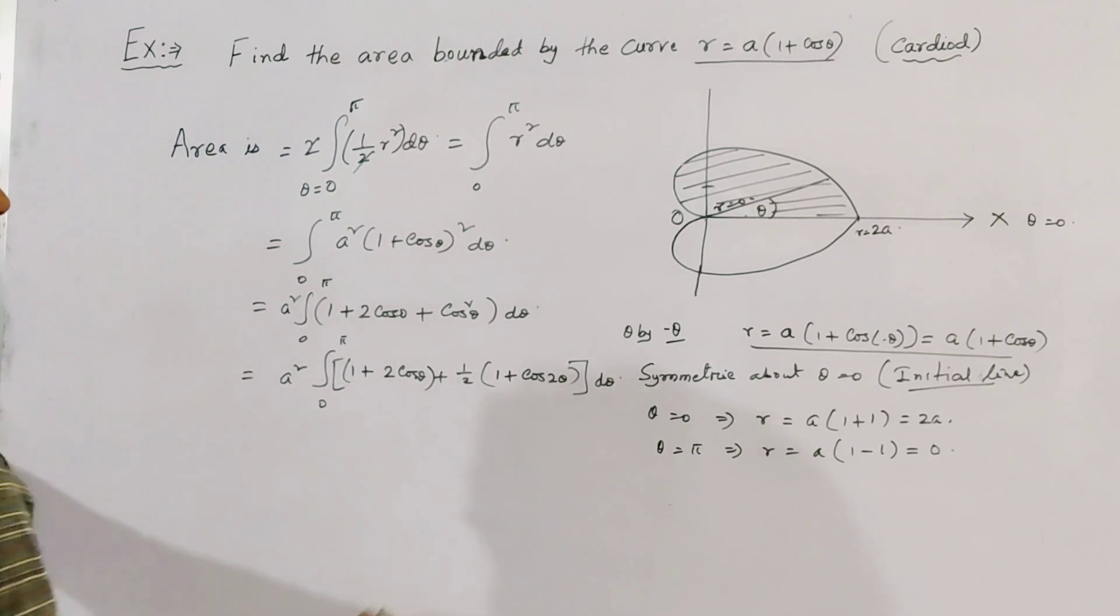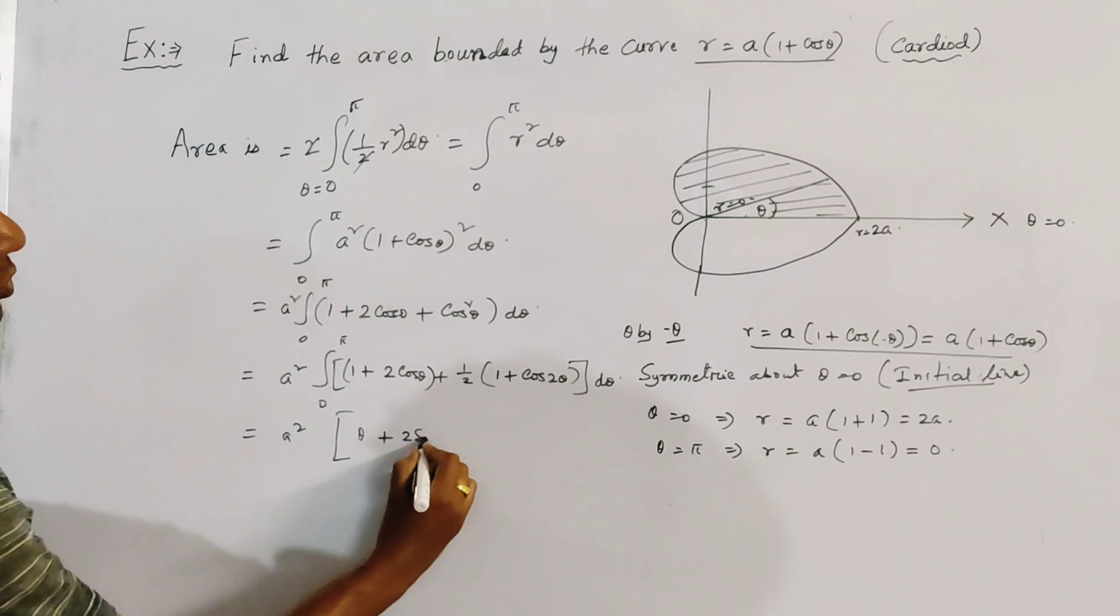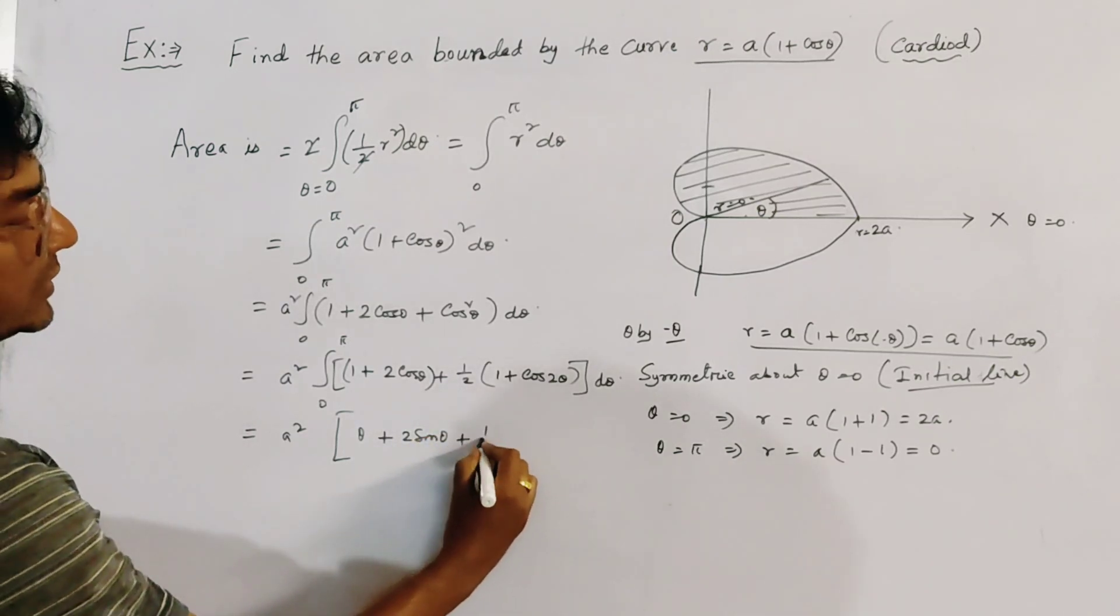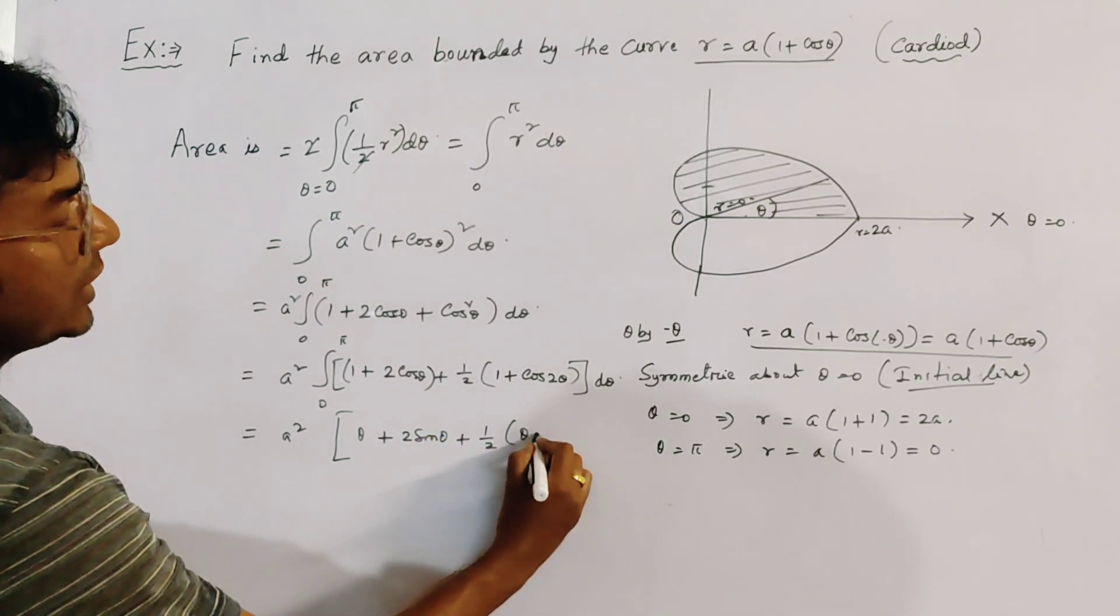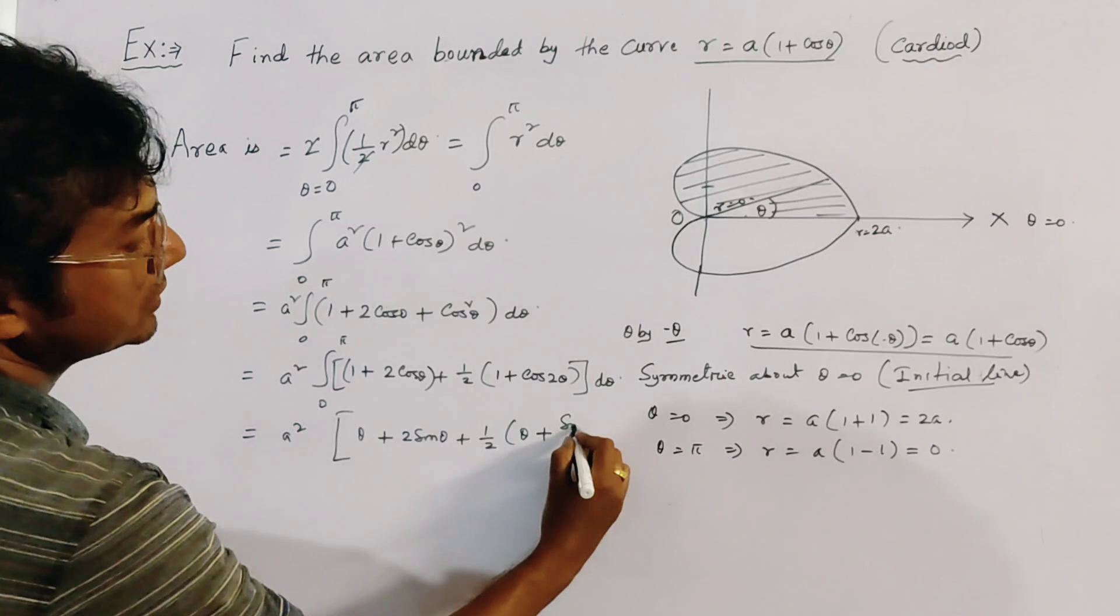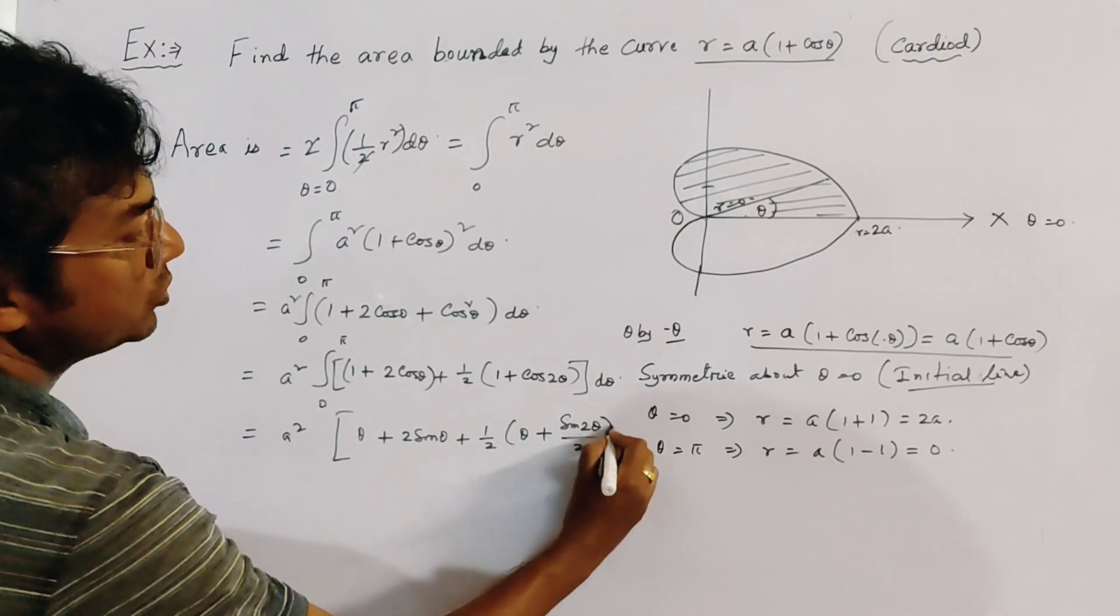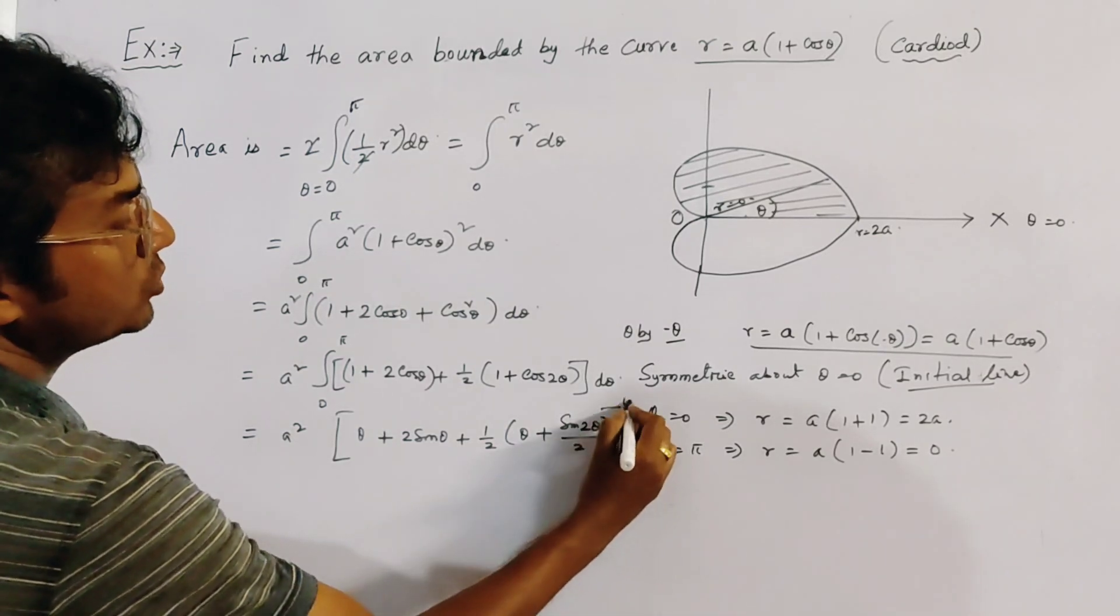Now integrating, we get A squared into theta, 2 sin theta, half into theta plus sin 2 theta by 2, and the range is 0 to pi.